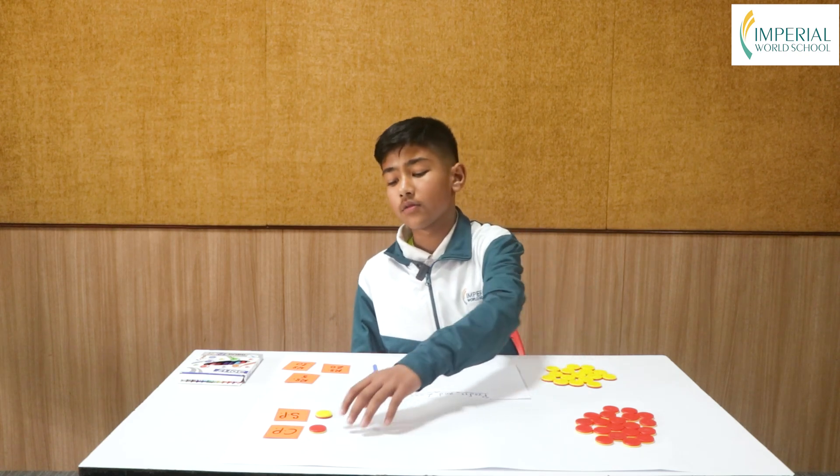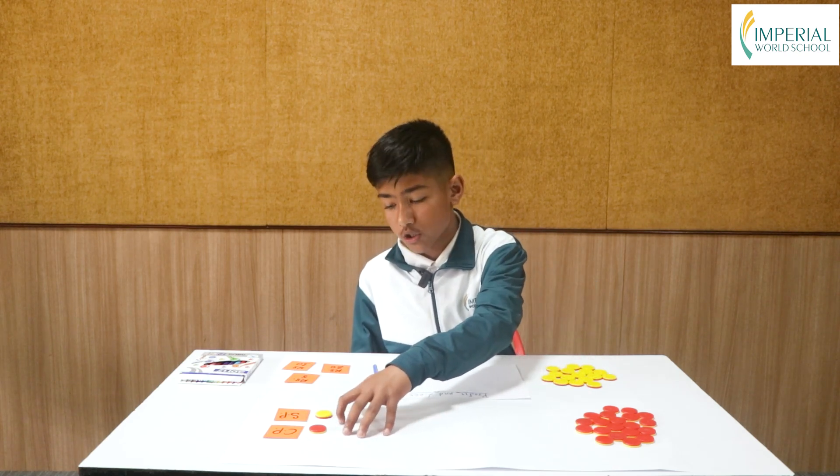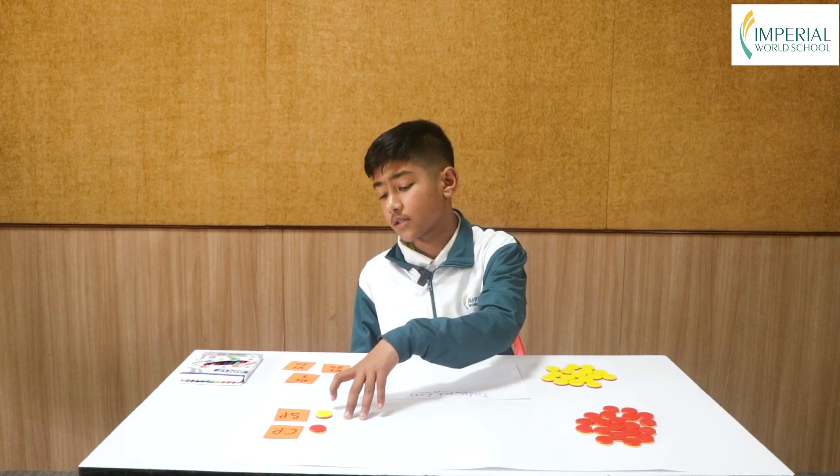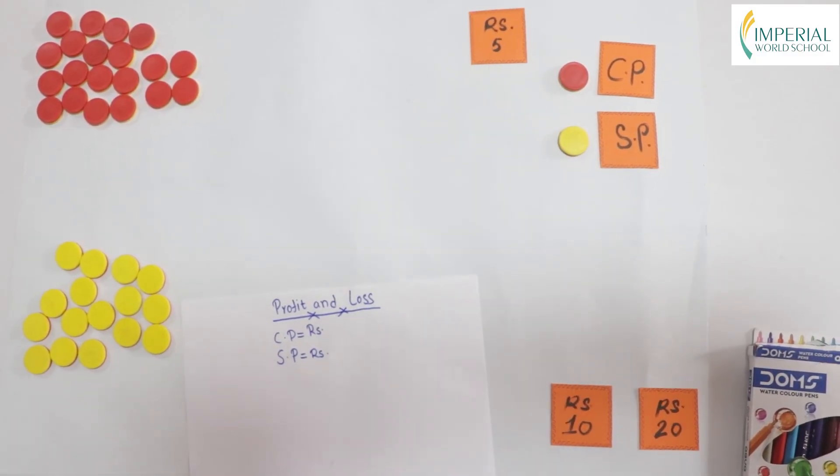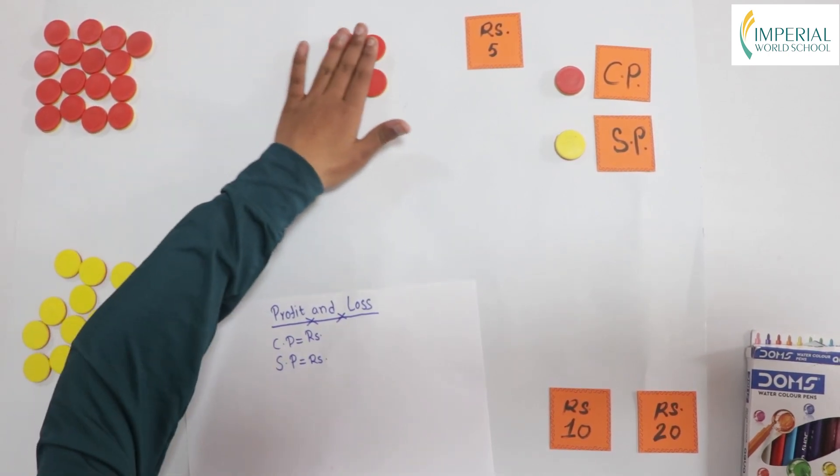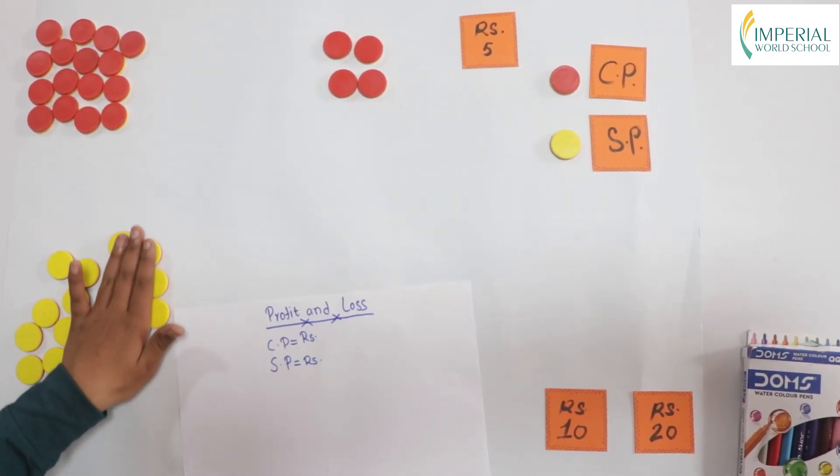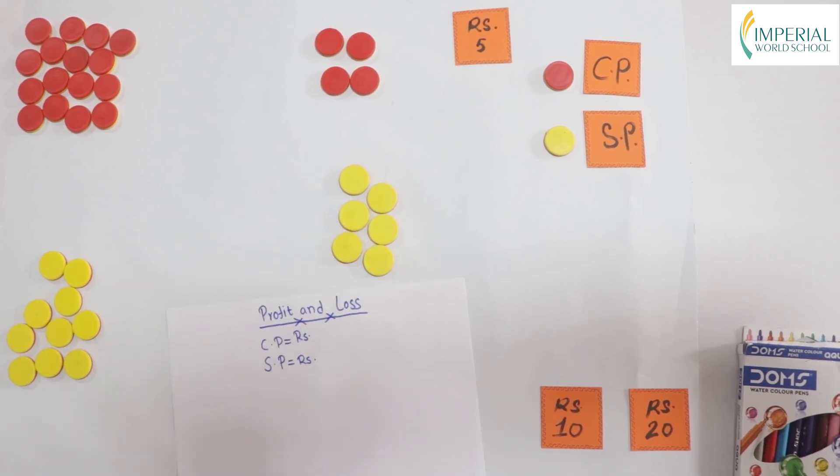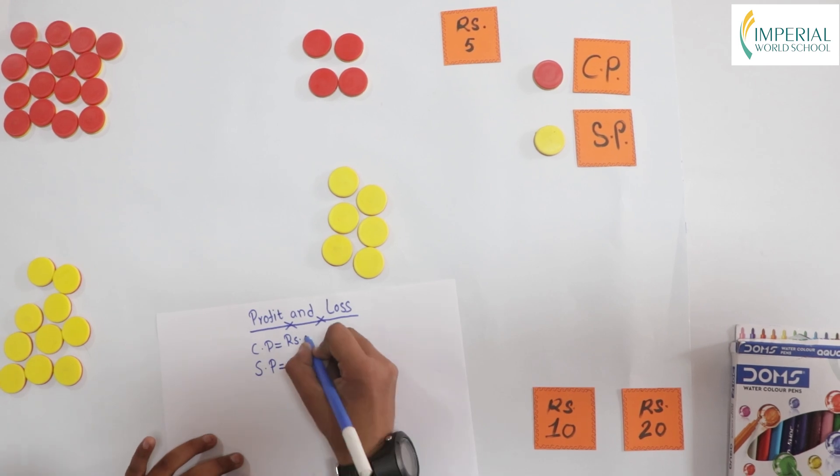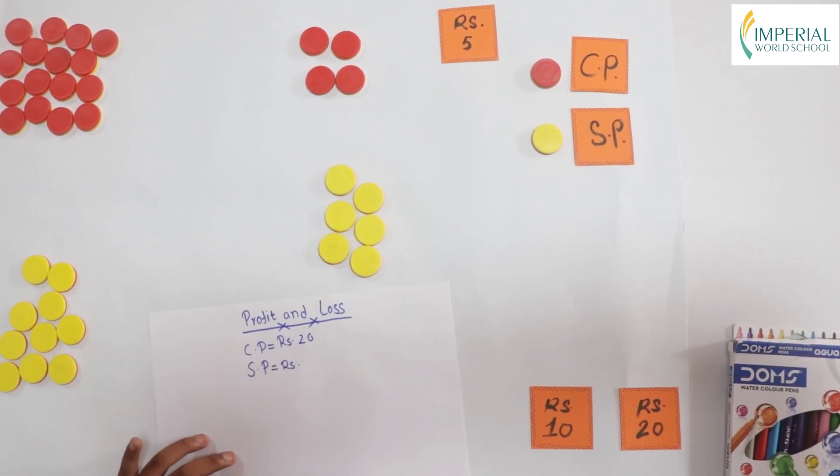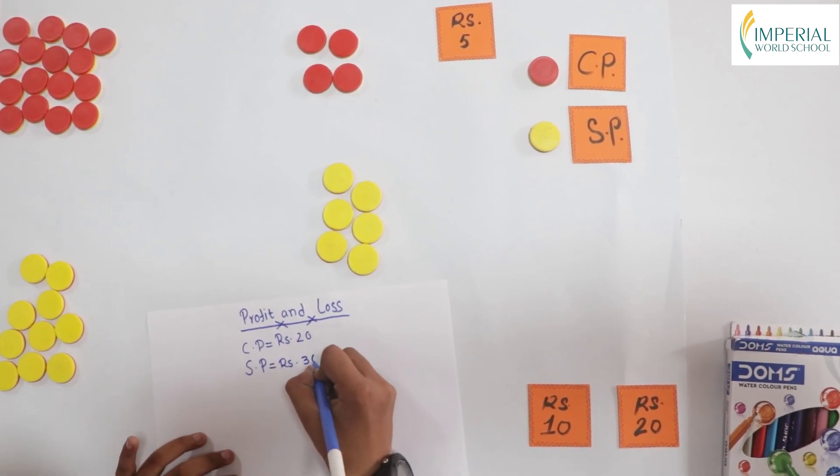Now we have the red tiles as cost price and the yellow tiles as selling price. Let's take per piece as rupees 5. Let's take 4 tiles for cost price and 6 tiles for selling price. We know that our cost price is 20 and our selling price is 30.